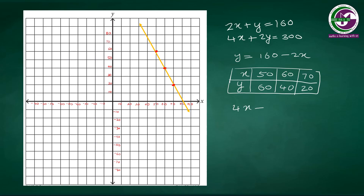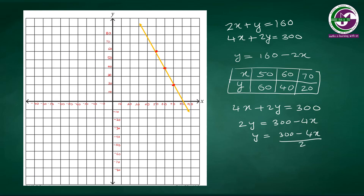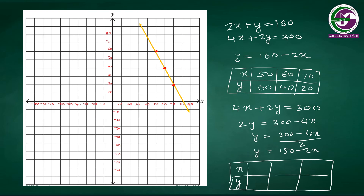The second equation, 4x plus 2y equals 300, simplifies to y equals 150 minus 2x. Drawing the table: when x is 70, y is 10; when x is 80, y is negative 10; when x is 75, y is 0. Plotting points (70, 10), (80, negative 10), and (75, 0) on the graph and drawing the line through them gives the graphical representation of this question.